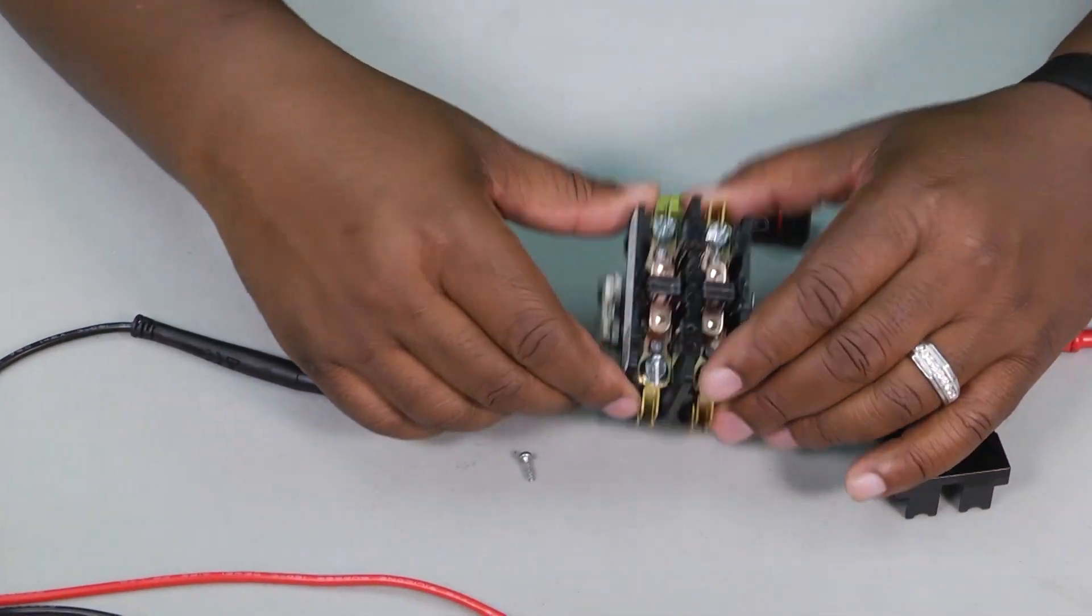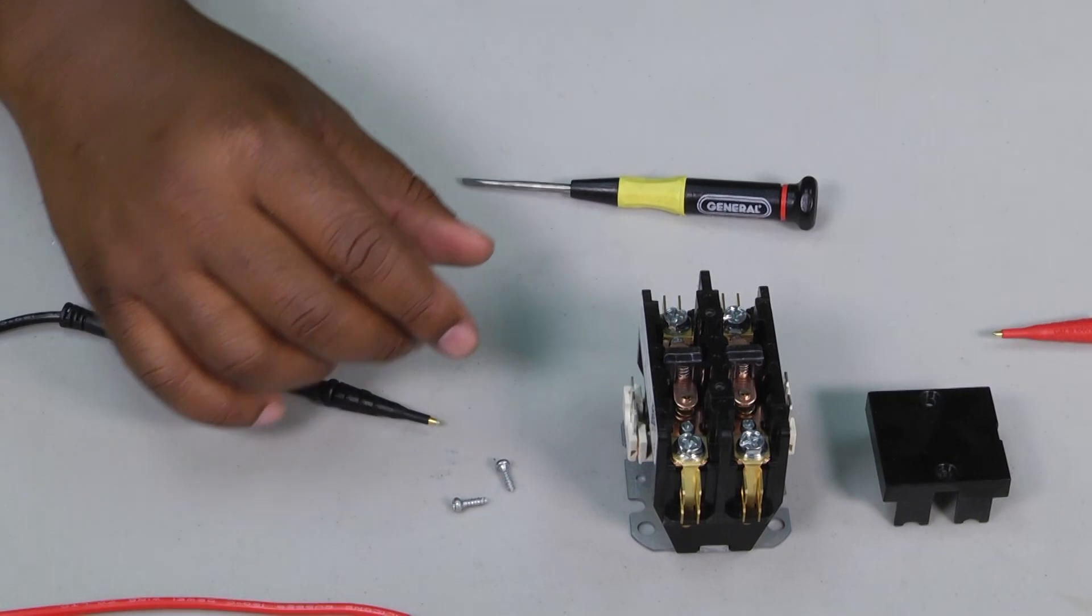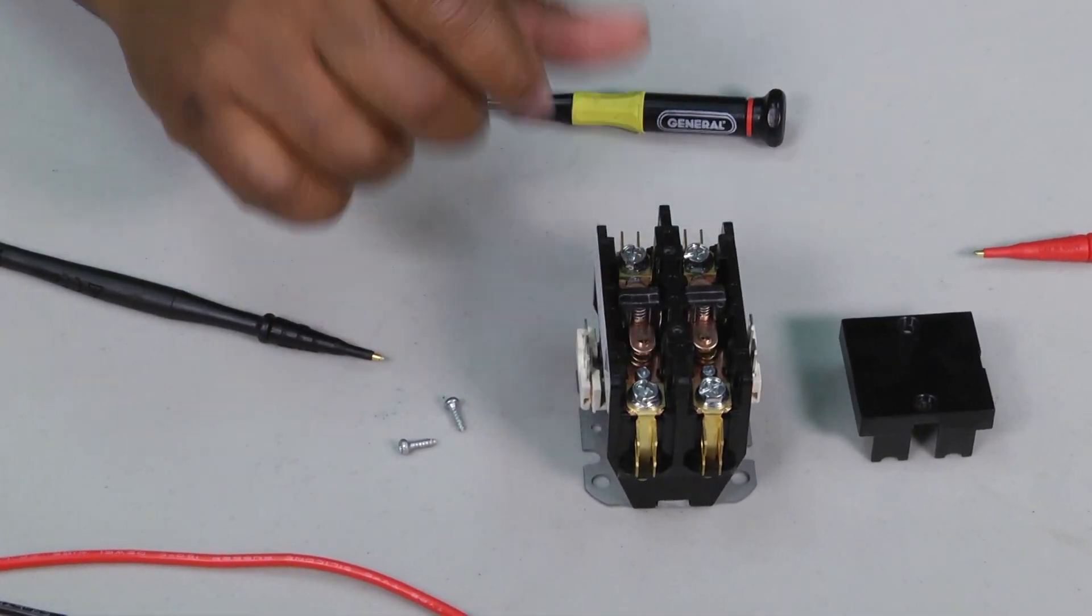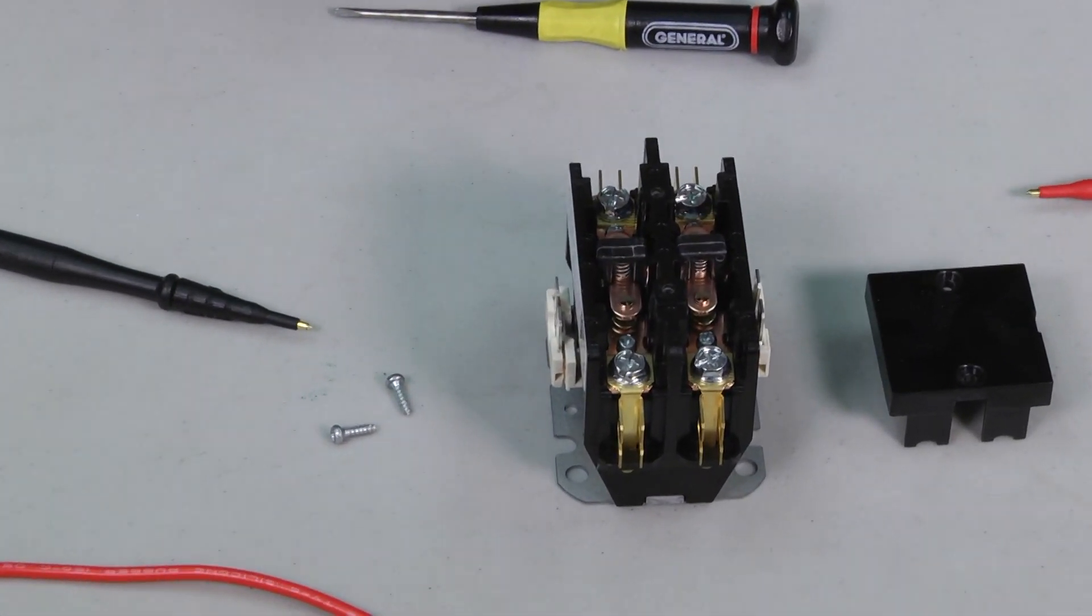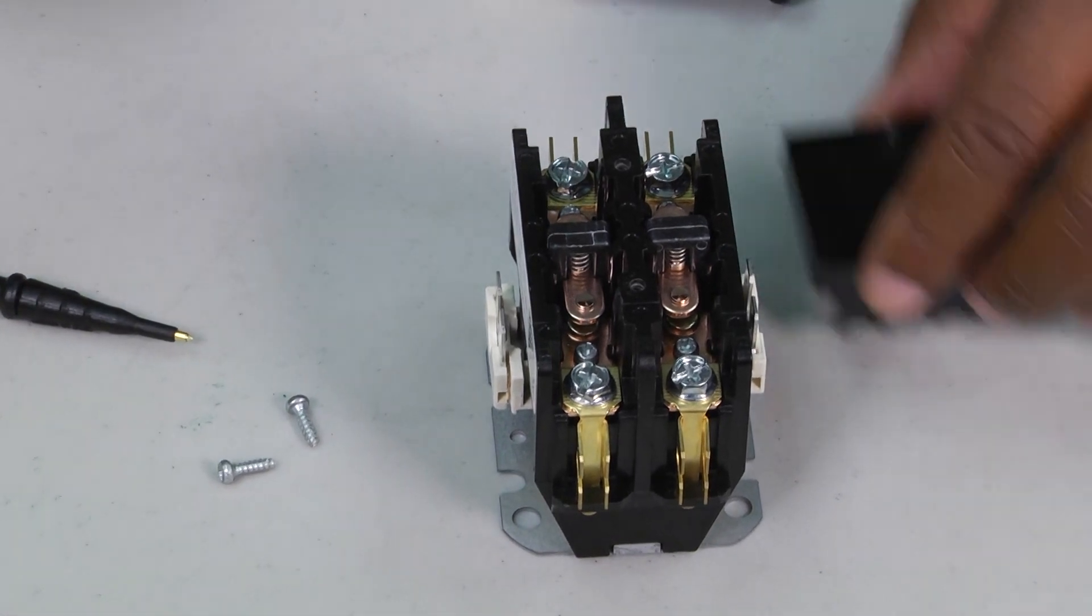Once we get that off, there's the inside of our contacts. That's the little contactor right there that makes noise and all the chatter when we hear it.